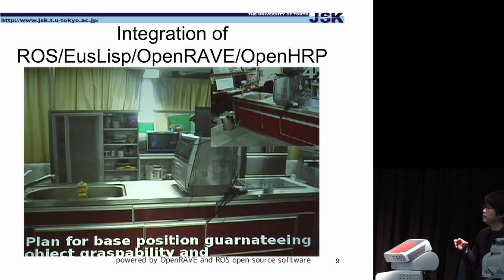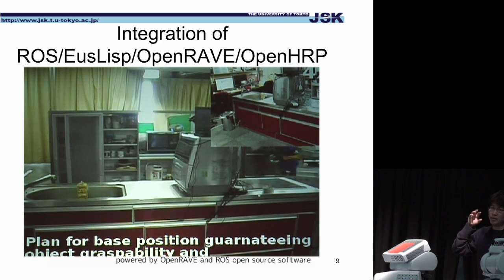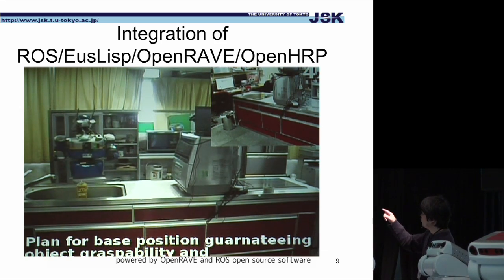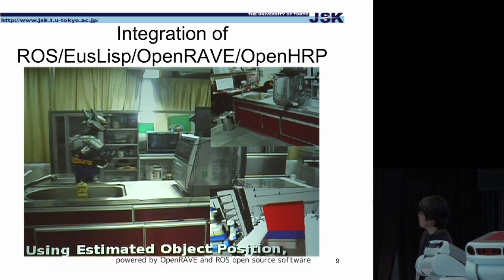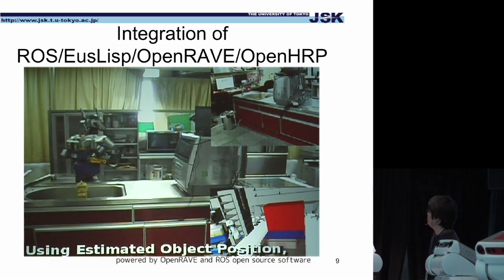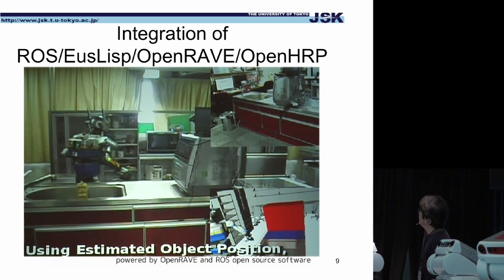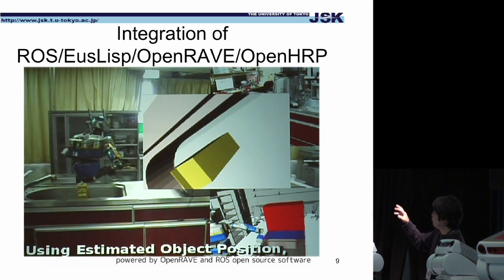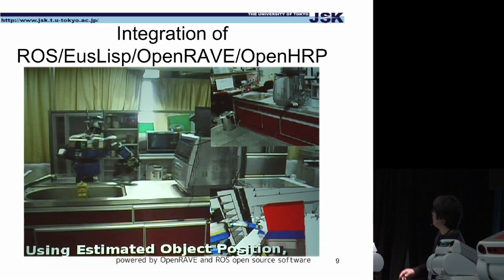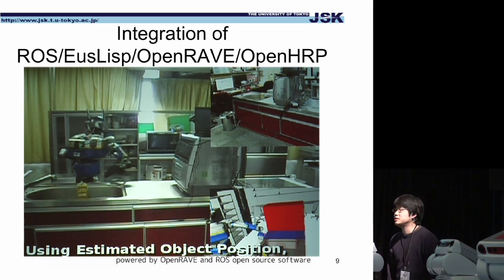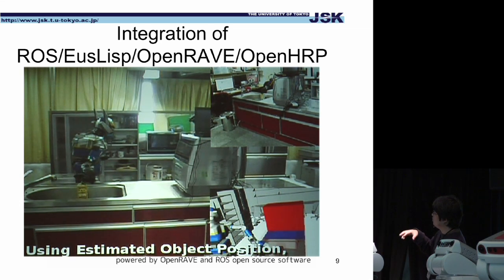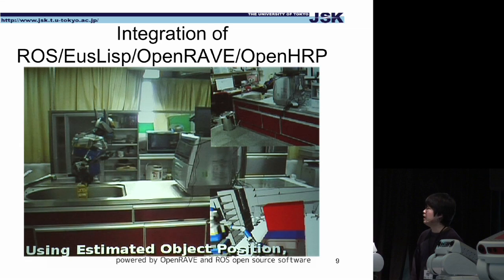At the beginning, the robot uses a head camera to localize the object position, which is not always correct, but the robot moves to that position. This motion is calculated by OpenRAV. After that, the robot uses a forearm camera to grasp the object. The position, posture, and motion are all calculated and generated by the OpenRAV system.